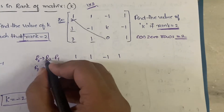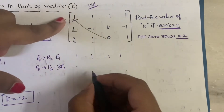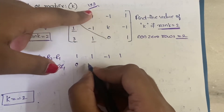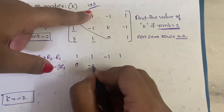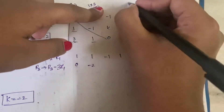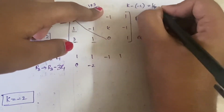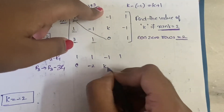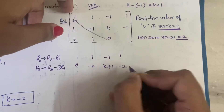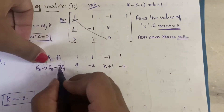For R2 minus R1: one minus one gives zero; minus one minus one gives minus two; and k minus of minus one is k plus one. Then minus one minus one gives minus two again.